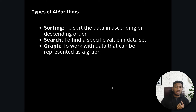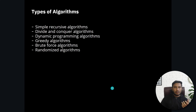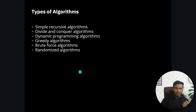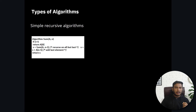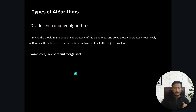Then we have graph algorithms, which help us work with data that can be represented as a graph. We also have recursive algorithms, divide and conquer, dynamic programming, greedy algorithm, brute force algorithm, and randomized algorithm. Here is a simple example of a recursive algorithm — if you define a function called 'sum' and call that function inside itself, we call it a recursive algorithm.